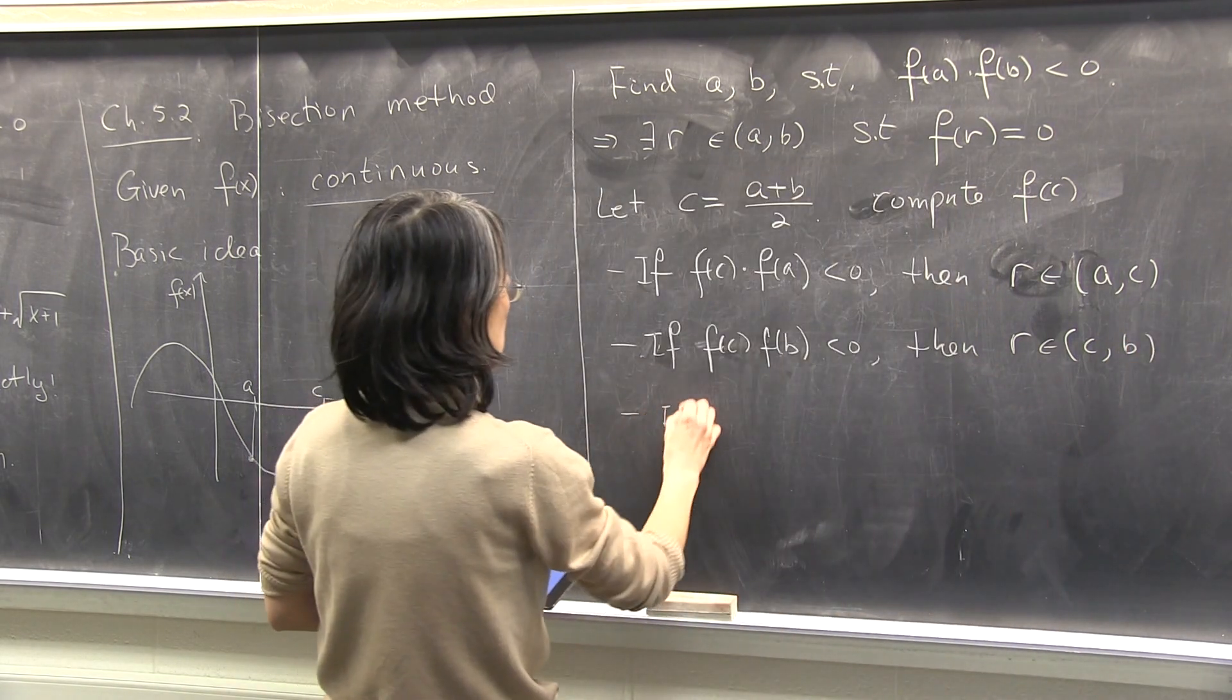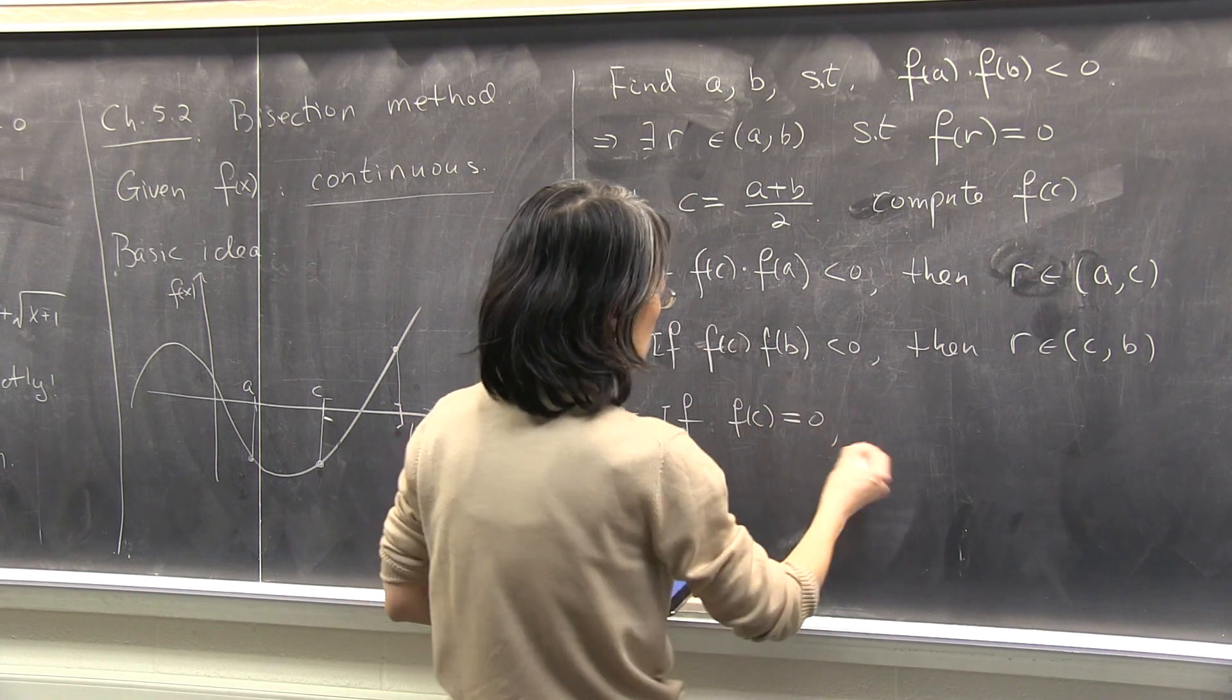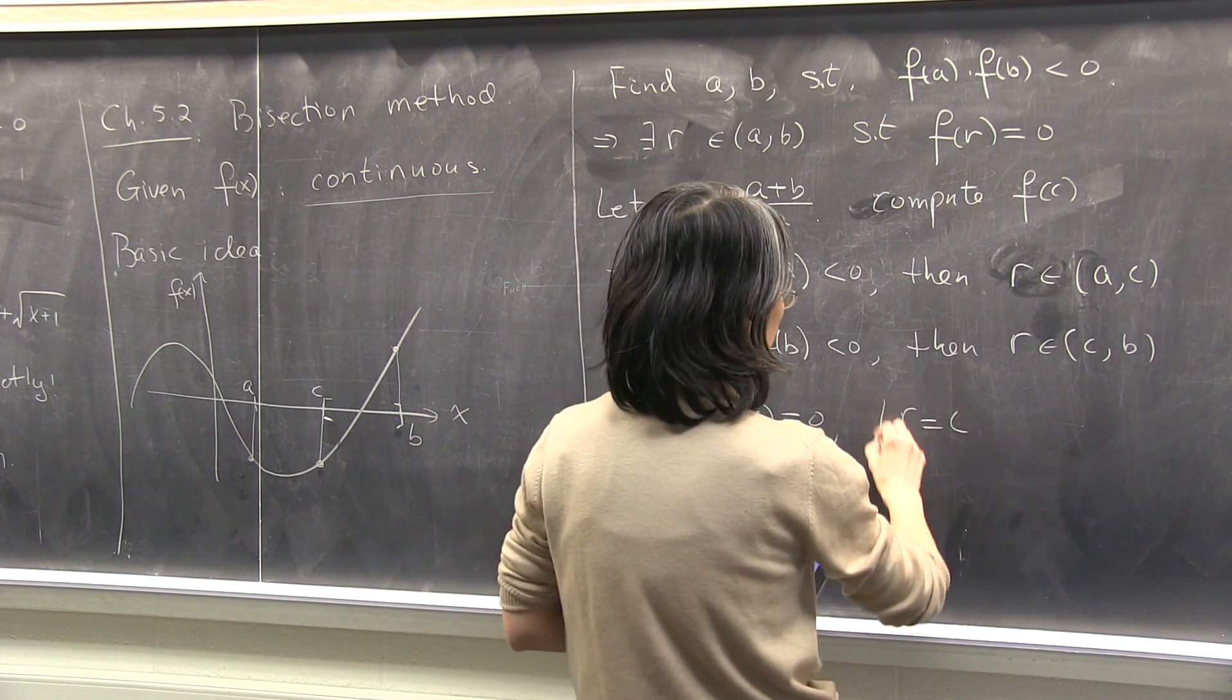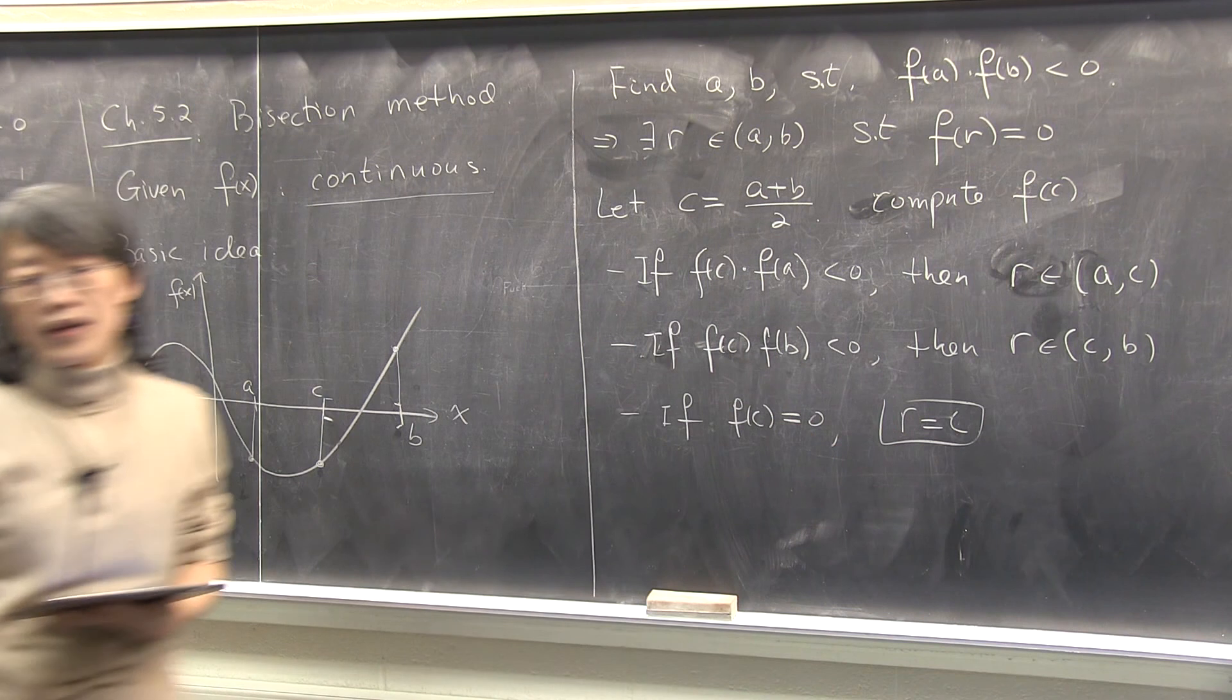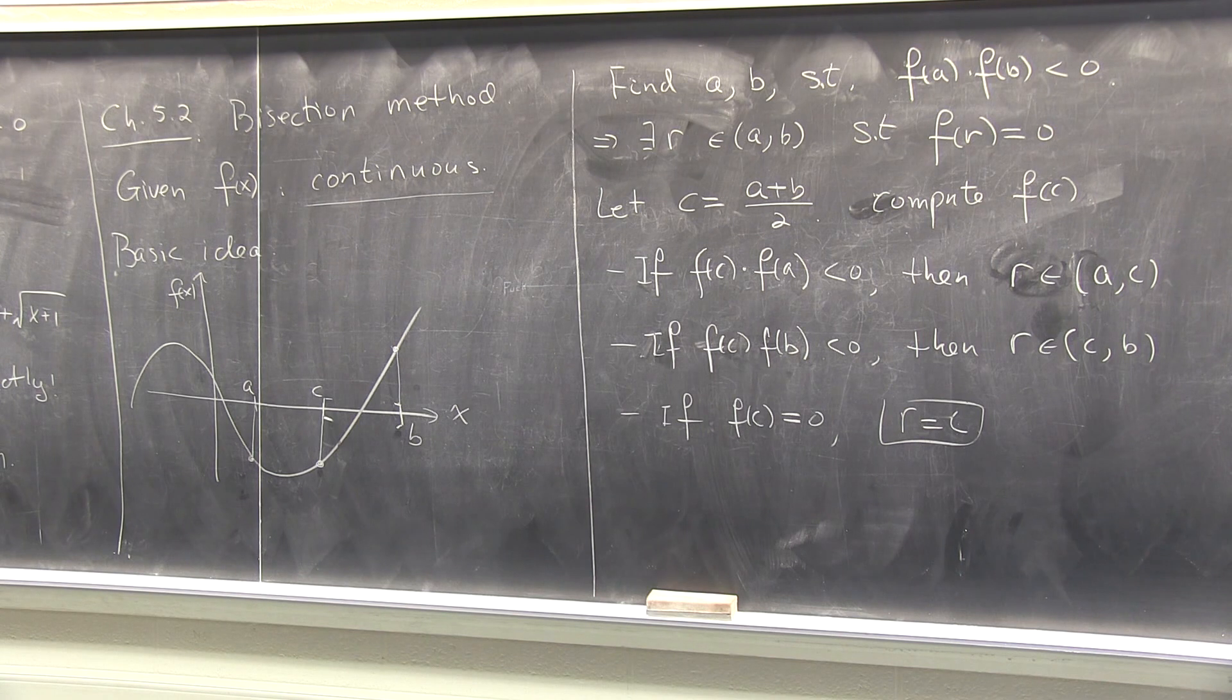And then if you are so lucky that f of c identically equals to zero, then you have found the root, and you stop. But that we don't consider because you are not that lucky. It doesn't happen. In general, it doesn't happen, right?